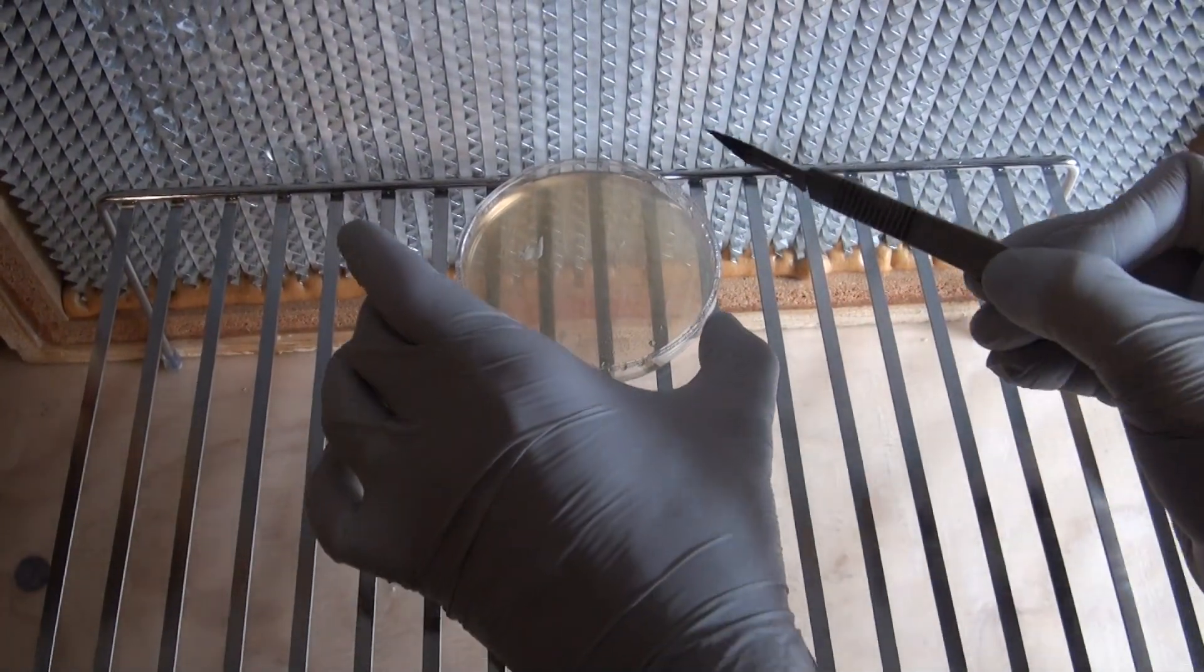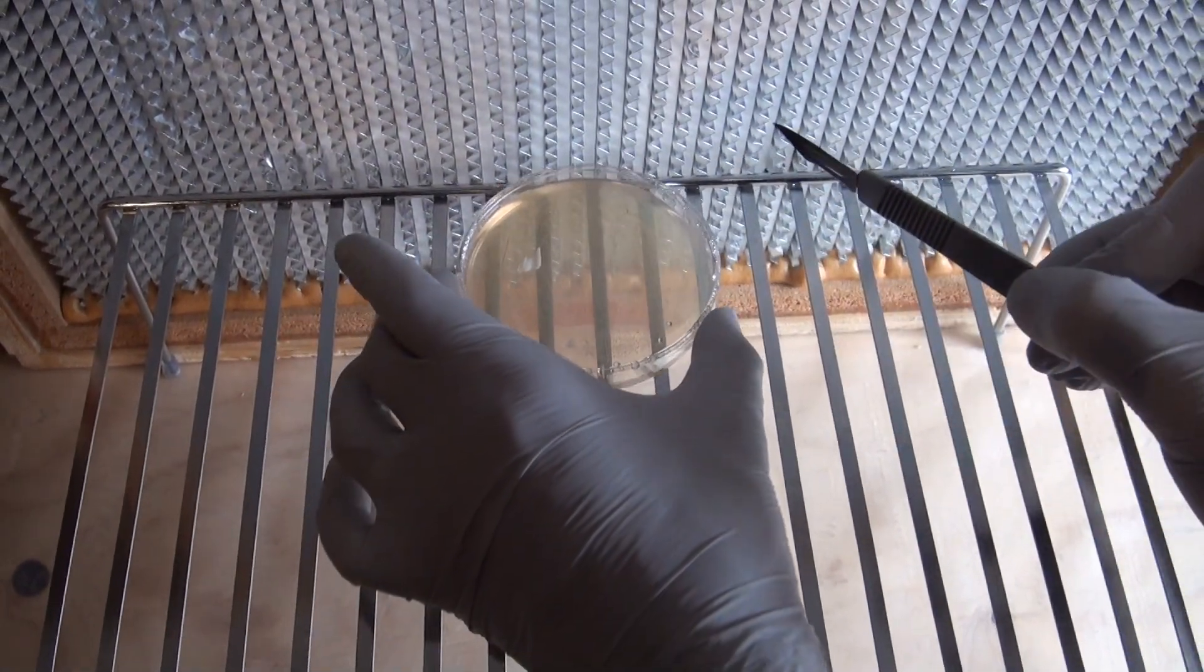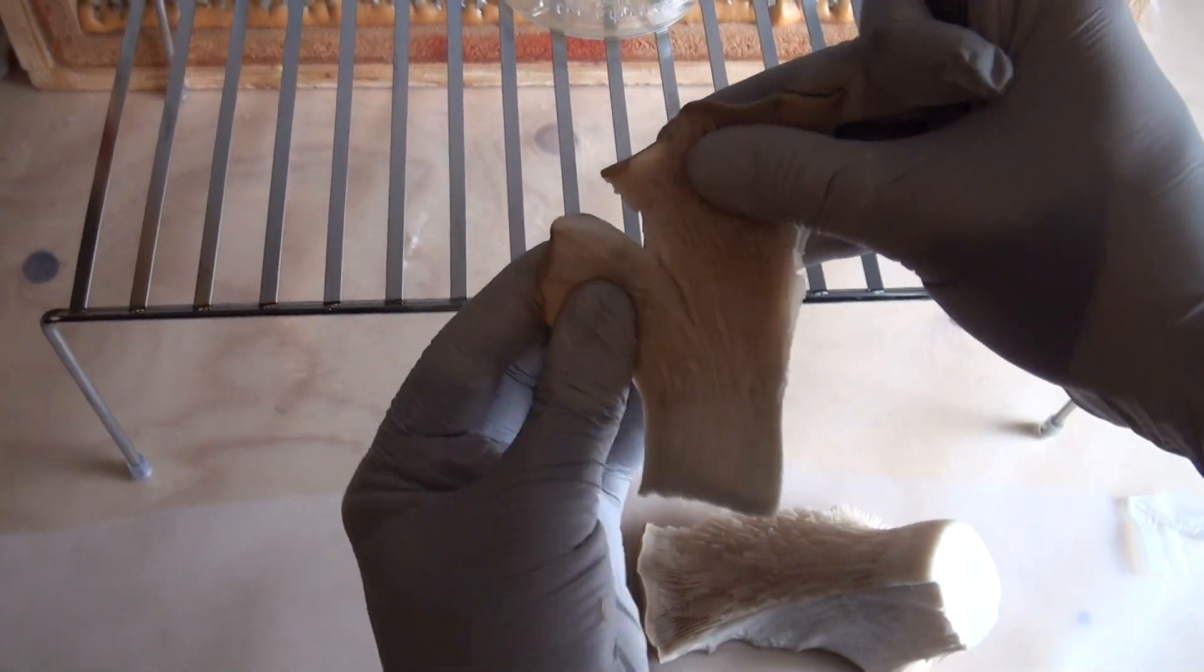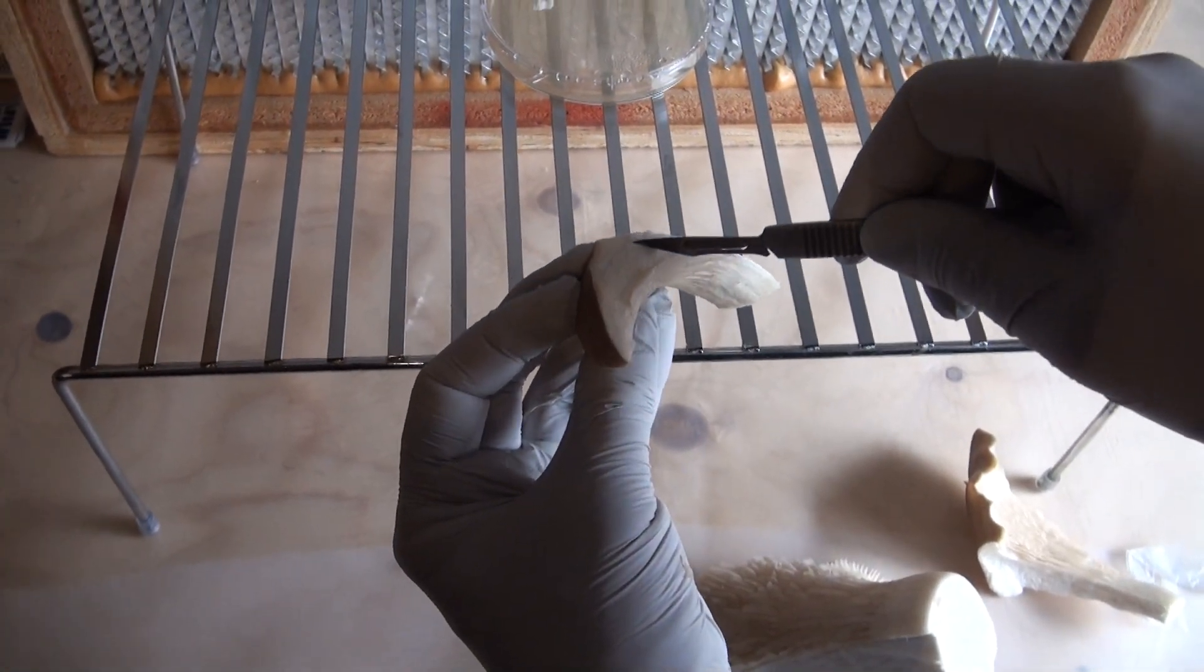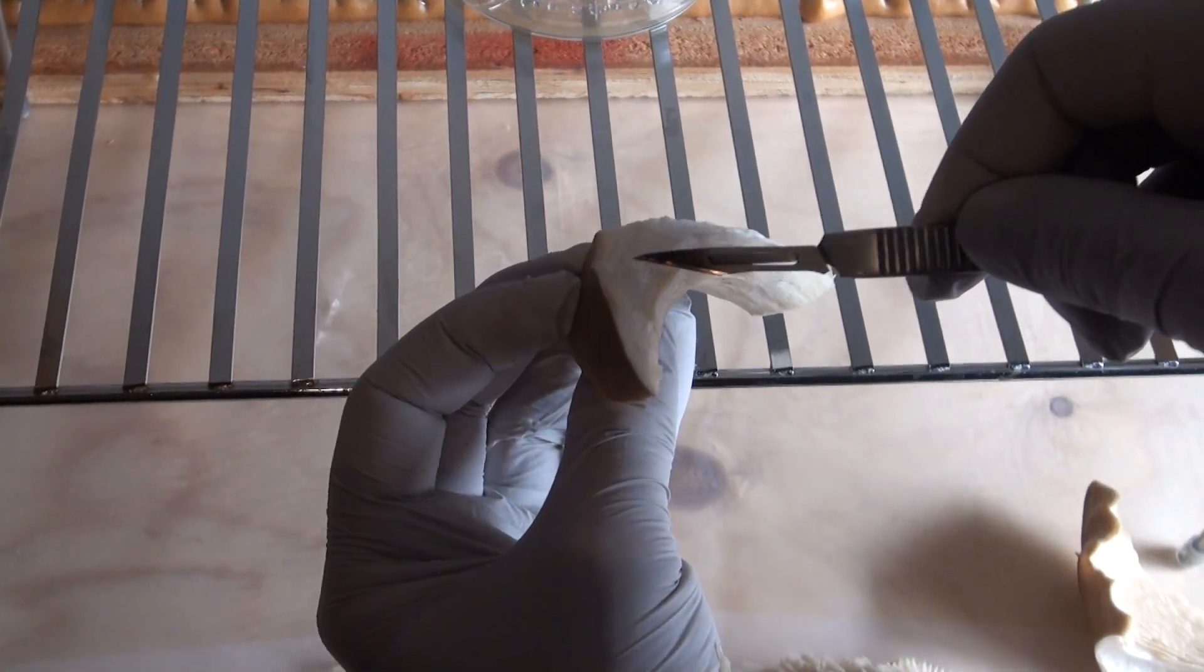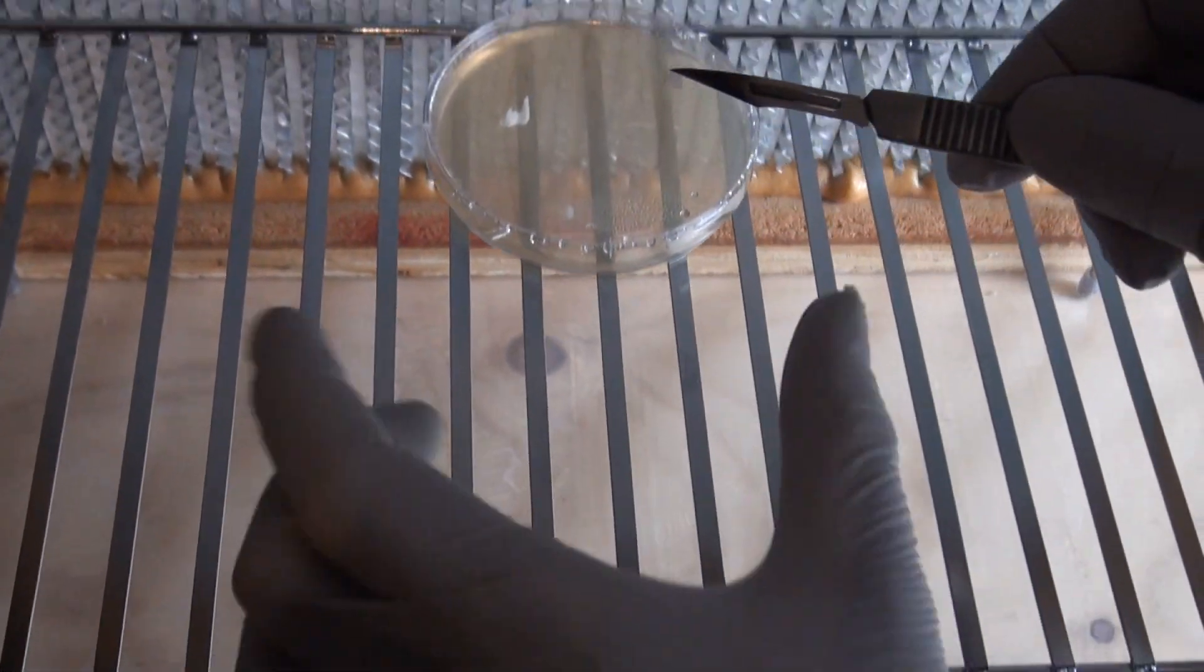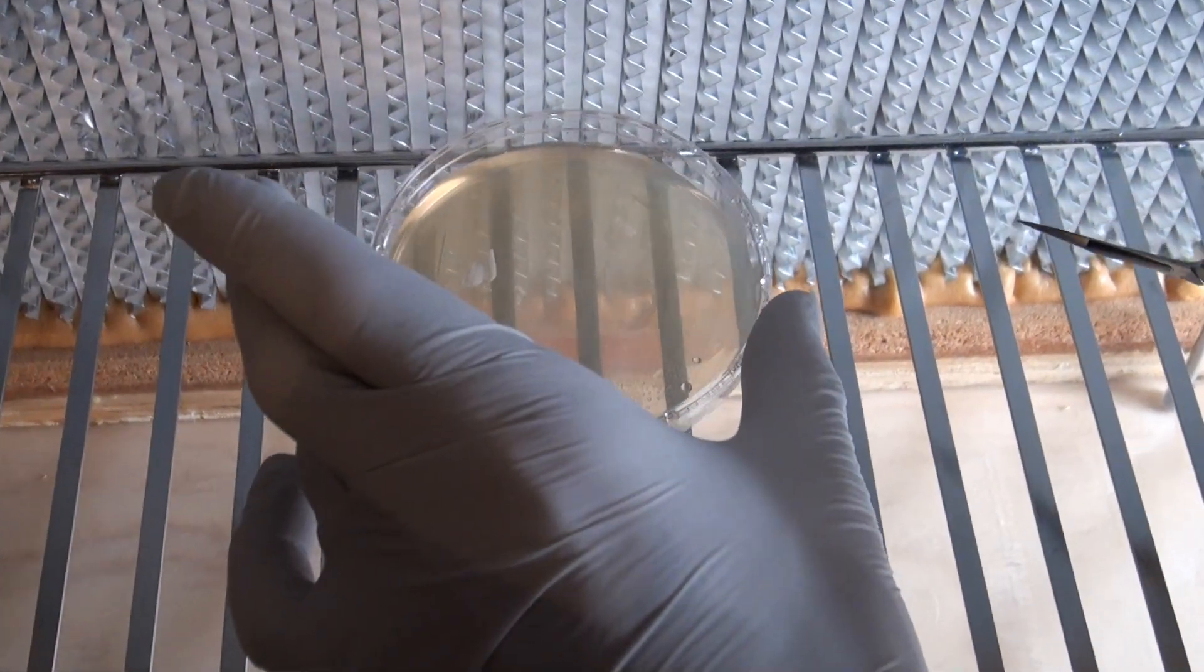Okay, so again I'm going to take the scalpel that's been flame sterilized, cool it in the dish, and take the mushroom fruit body, tear open a fresh piece, scrape some of the tissue out, and go ahead and place that down on the dish.